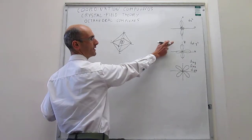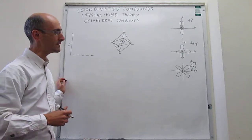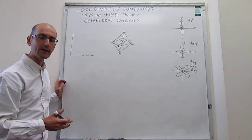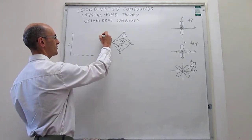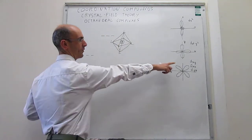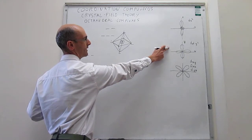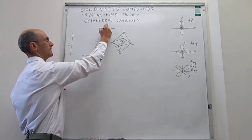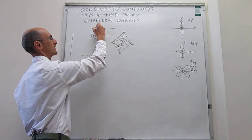The energies of the dz² and dx²-y² are more destabilized because they point right along the ligands, while the dxy, dxz, and dyz are not so destabilized because they don't point along the ligands. So the picture shows three orbitals — dxy, dxz, and dyz — at lower energy, and the two orbitals — dx²-y² and dz² — at higher energy. These orbitals receive different names: the lower set is called T2g, and the upper set is called Eg.